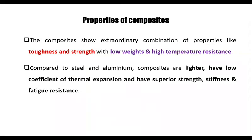Compared to steel and aluminum, composites are lighter, have low coefficient of thermal expansion, and have superior strength, stiffness, and fatigue resistance. The composite materials are less in weight and will not expand much when heat is applied to that material. Stiffness means resistance of material to deformation. Fatigue resistance means the load bearing capacity of the composite material.